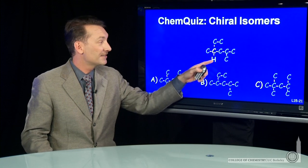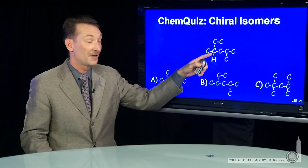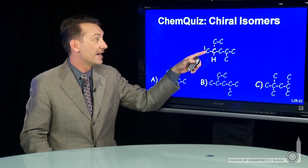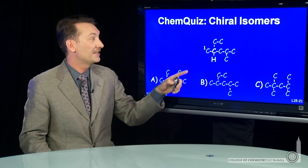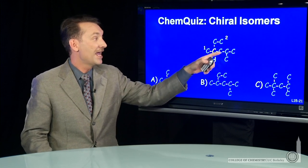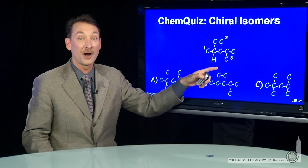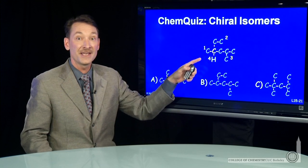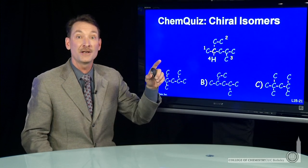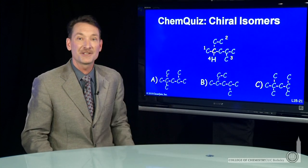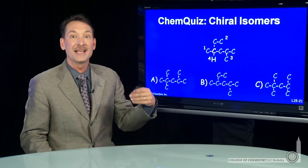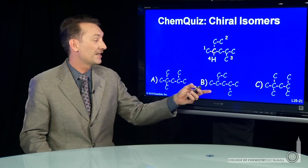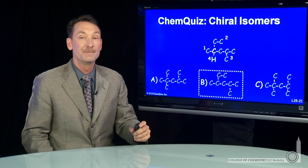This carbon here has a hydrogen — now that I've drawn that in, you can see a one-carbon chain attached, a two-carbon chain, and a four-carbon chain, all attached. Four different things attached to one carbon makes that an asymmetric center and lends chirality to the entire molecule. So the correct answer here is B.